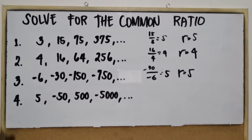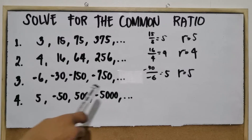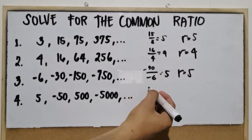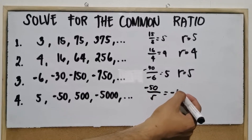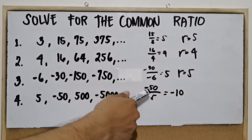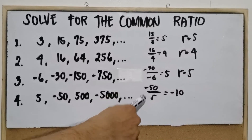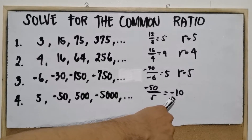Number 4: the sequence is 5, negative 50, 500, negative 5,000. Second term divided by the first term: negative 50 divided by 5 equals negative 10. Why is it negative? Because a negative divided by a positive is negative. When you divide unlike signs, the answer will always be negative.